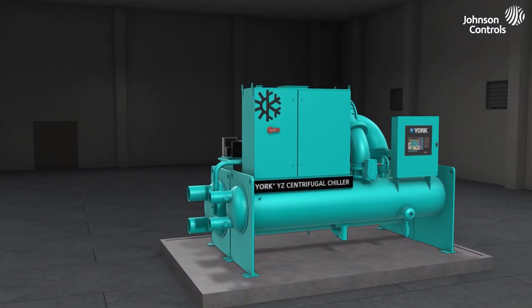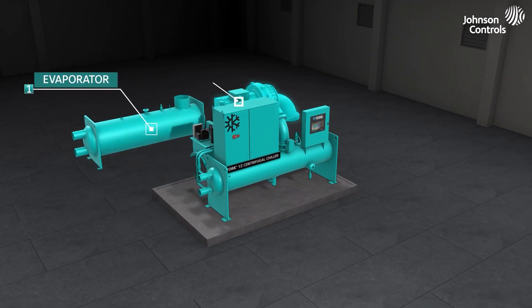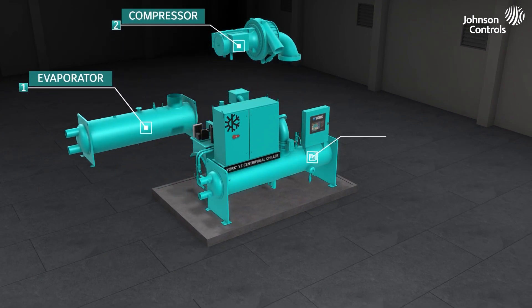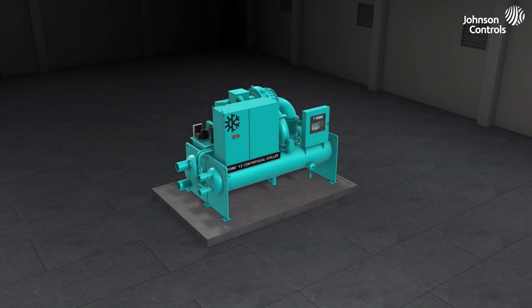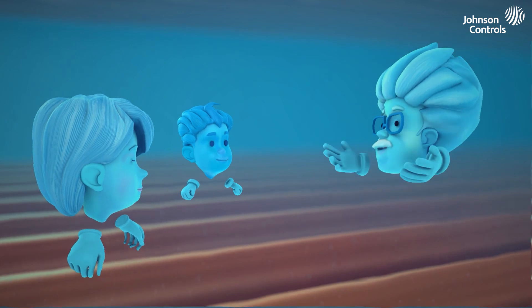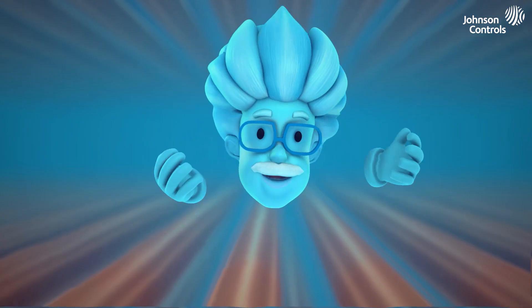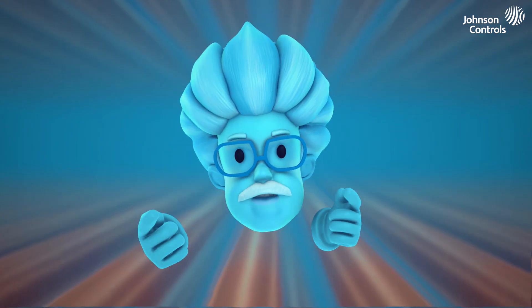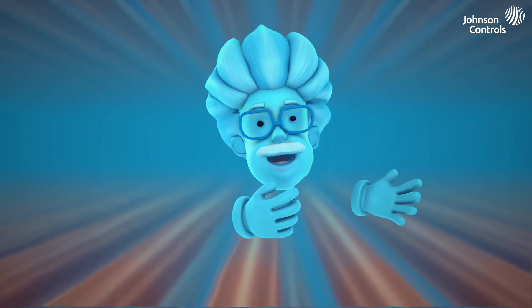Our role is to be the medium that carries heat through the refrigeration system by going through the refrigeration cycle. There are four components to this cycle: the evaporator, compressor, condenser, and metering device. Once we finish, we start all over again. Are you ready to join me on our voyage through the refrigeration cycle?